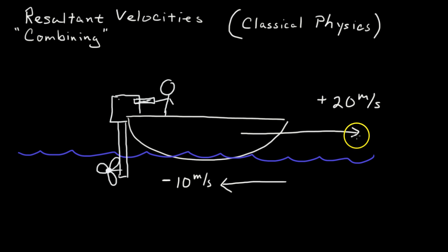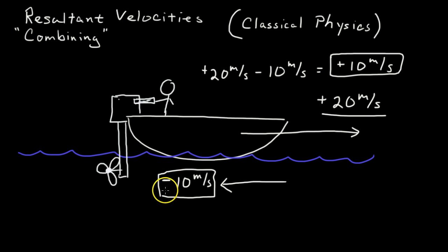So the boat traveling against the current at 20, the current itself is 10 meters per second. So we combine those velocities of the positive 20 meters per second and the negative 10 meters per second, and it results in a positive 10 meters per second. And so the boat itself, even though the engine is trying to go 20 meters per second, the current is fighting against it at 10 meters per second. And so it results in a resulting velocity of a positive 10 meters per second.